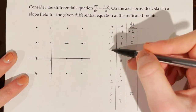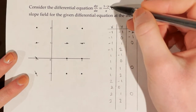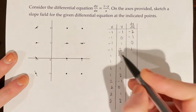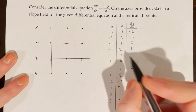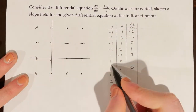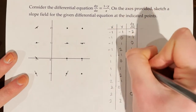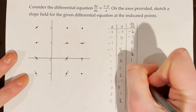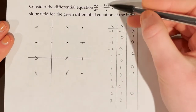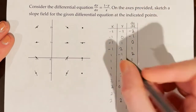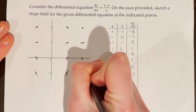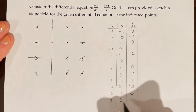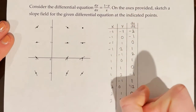For (-1, 2): (1 - 2) / (-1) = -1 / -1 = +1. For (1, -1): (1 - (-1)) / 1 = 2, slope is 2. For (1, 0): (1 - 0) / 1 = 1. For (1, 2): (1 - 2) / 1 = -1. For (2, -1): (1 - (-1)) / 2 = 2/2 = 1. For (2, 0): (1 - 0) / 2 = 1/2. For (2, 2): (1 - 2) / 2 = -1/2. We sketch tiny tangent lines at each point with the appropriate slope.